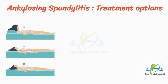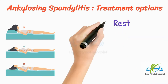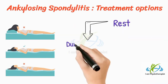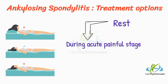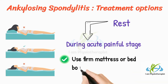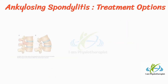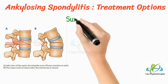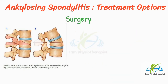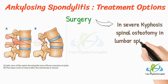Treatments of ankylosing spondylitis: First, drugs — salicylates and indomethacin may help to control pain. Second, rest — bed rest may be indicated during the acute painful stage of the disease; use a firm mattress or bed board with a low or no pillow to avoid kyphosis.